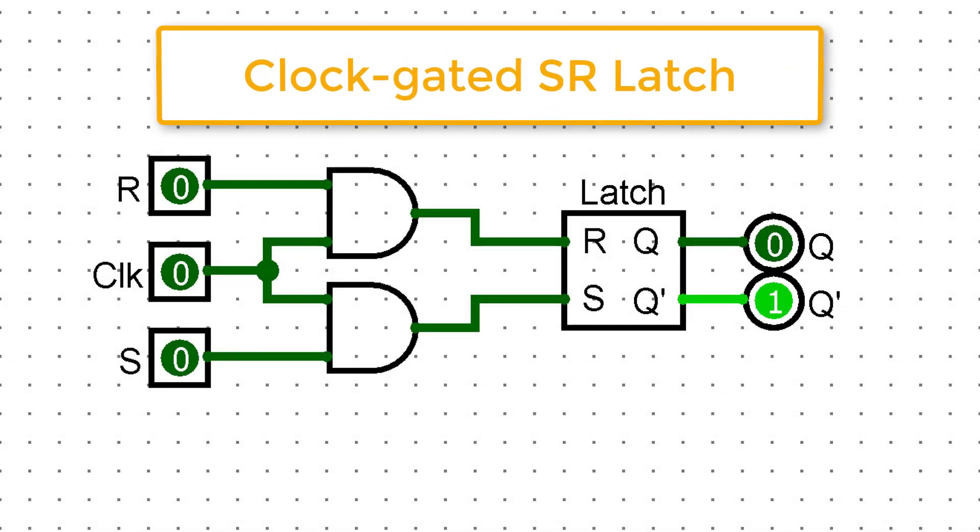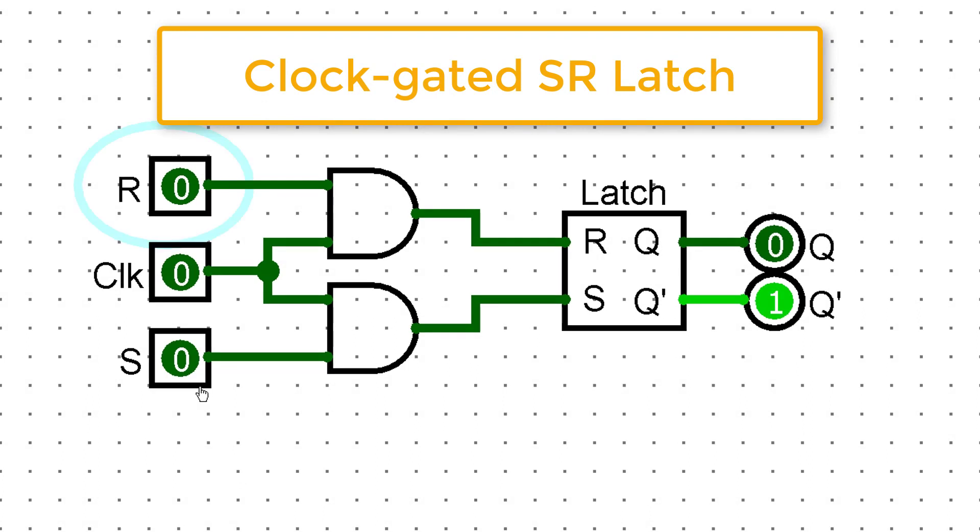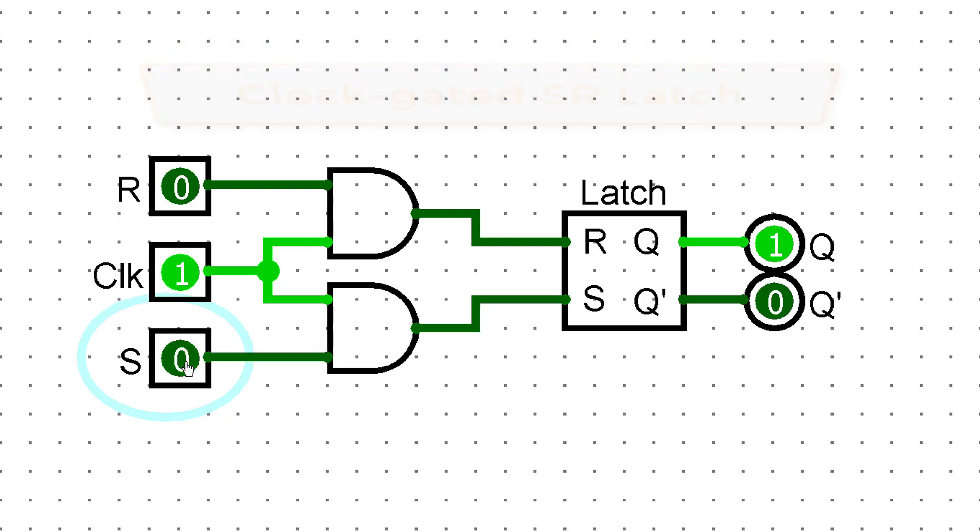We'll now look at a clock-gated SR latch. This kind of SR latch will only change value when the clock signal is on. We could of course invert the clock signal so the latch changes value only when the clock input is off.